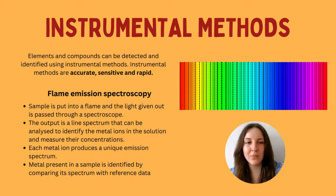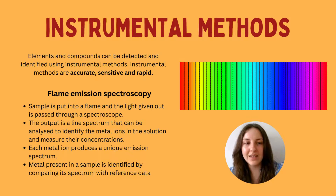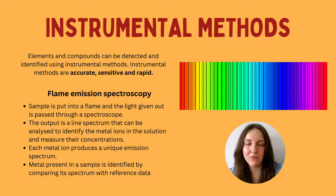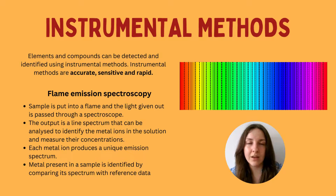In flame emission spectroscopy, the sample is put through a flame and the light given out is passed through a spectroscope. The output is a line spectrum, which can be analyzed to measure concentrations and identify ions in the solution. Each element has its own unique emission spectrum, making it straightforward to identify which metal is present by comparing against reference data sets.